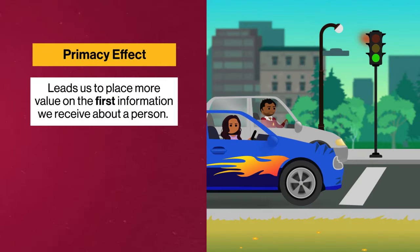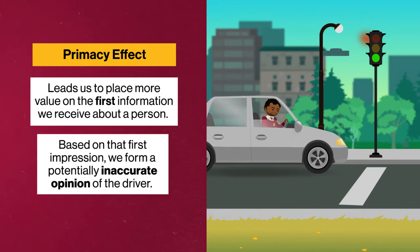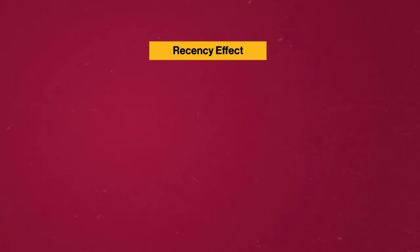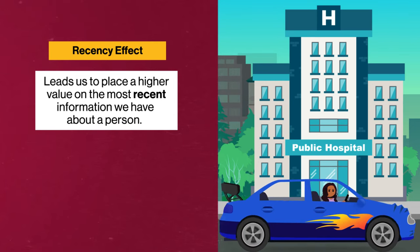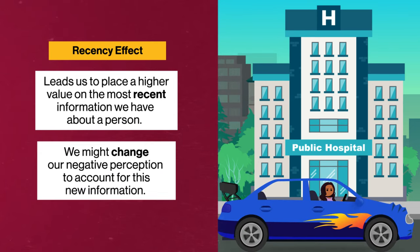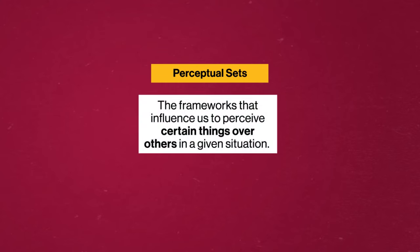There's also the primacy effect, which leads us to place more value on the first information we receive about a person. Since we can't interact with the driver of that car, we draw conclusions based on the first information we receive — their busted fender and their choice to run a red light — forming a potentially inaccurate opinion, which is the primacy effect in action. Then there's the recency effect, which leads us to place higher value on the most recent information we have. So if we see the damaged car speed into a hospital parking lot after running the red light, we might change our negative perception to account for this new information.